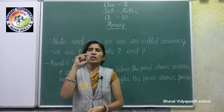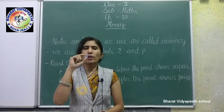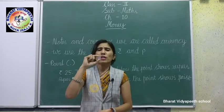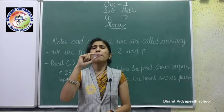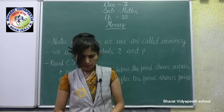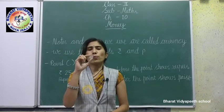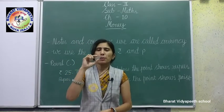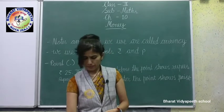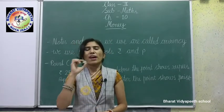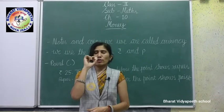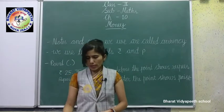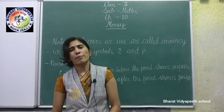This is one rupee. This coin, all of you have seen, is one rupee — it is made of metal. Two rupee: this coin is two rupees, also made of metal. Five rupee coin — this is also made of metal. So these coins are made of metal.